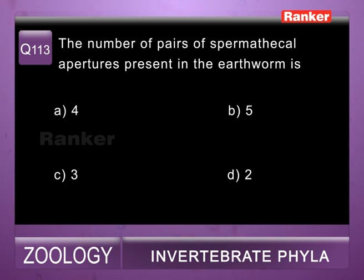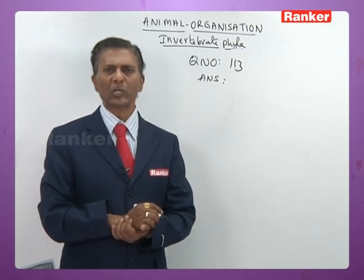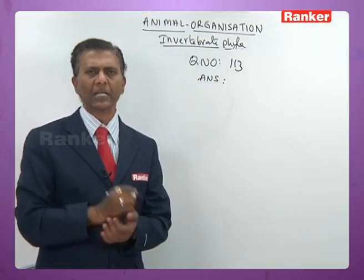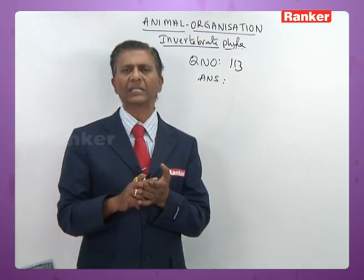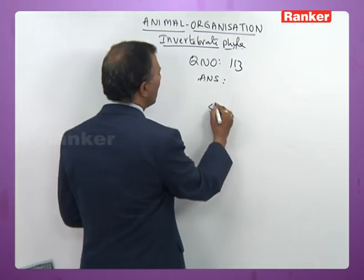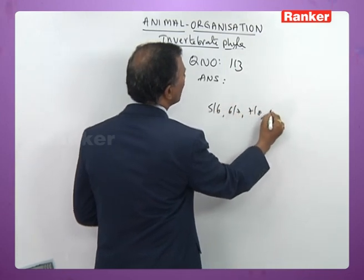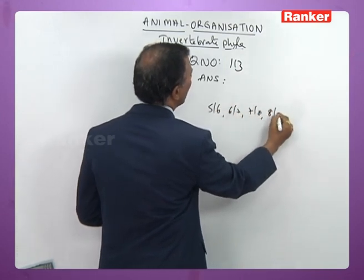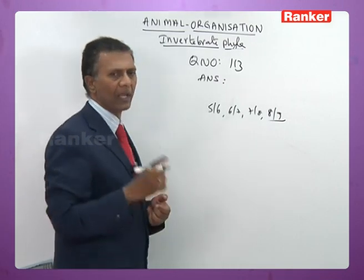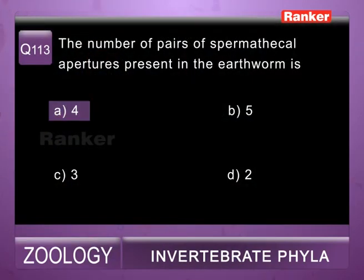Question 113: the number of pairs of spermathecal apertures in earthworm — a) 4, b) 5, c) 3, d) 2. In Pheretima posthuma, four pairs of spermathecae are present in segments 6, 7, 8, and 9; the spermathecal pores are present at 5/6, 6/7, 7/8, and 8/9 intersegmental grooves. So the answer for 113th question is a) 4 pairs.